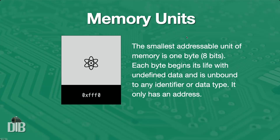First of all, we have the topic of memory units. Computer memory accessible to your running program, or the process as it's known by the operating system, is going to be divided into memory units. In most modern architectures, the smallest memory unit that can be assigned an address is going to be the byte — even though a byte has eight bits inside of it, the smallest unit we can address at the hardware level is the byte.